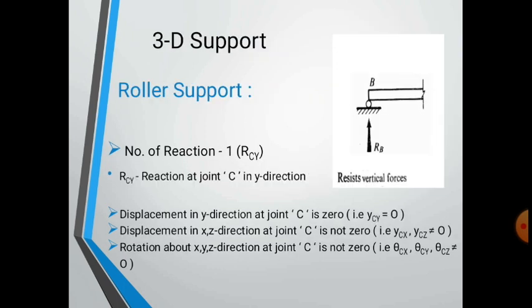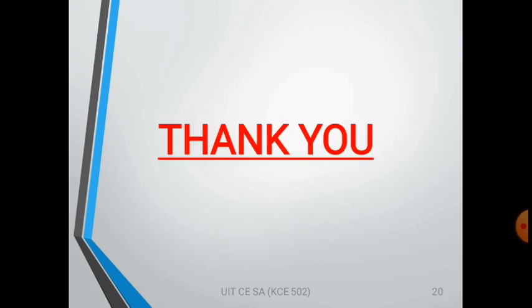For the roller support in 3D, there is only one reaction, denoted RC y. The displacement in the y-direction at joint C is zero, while displacements in the x and z directions are not zero. Similarly, theta C x, theta C y, and theta C z are not equal to zero because it can rotate. This concludes the support system discussion. In our next lecture we will cover the remaining portion. Thank you.